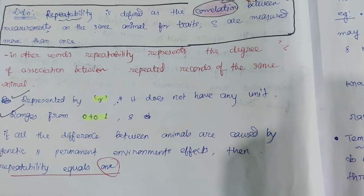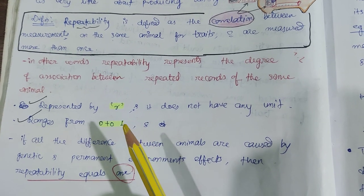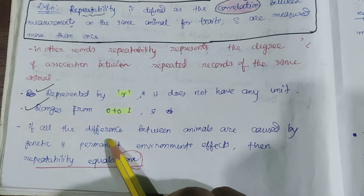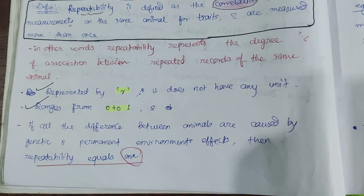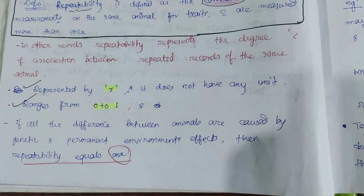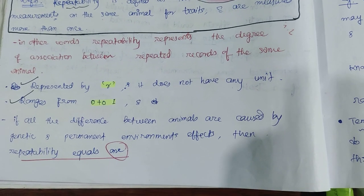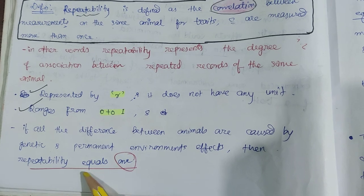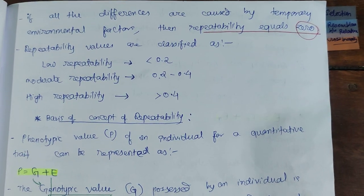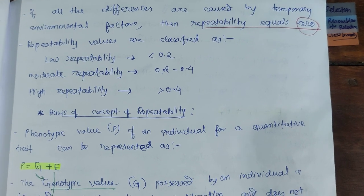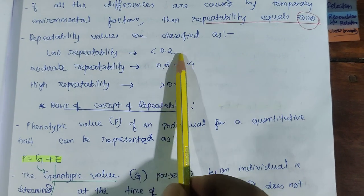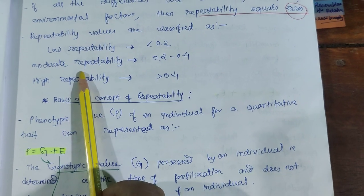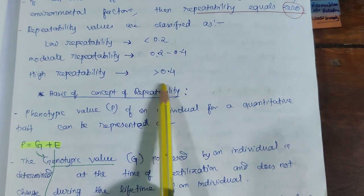Note that heritability also has no unit and ranges from 0 to 1. Repeatability values are classified as: low repeatability — less than 0.2; moderate repeatability — 0.2 to 0.4; and high repeatability — more than 0.4. If all differences between animals are caused by genetic and permanent environment effects, repeatability equals 1. If all differences are caused by temporary environmental effects, repeatability equals 0.